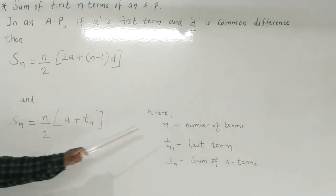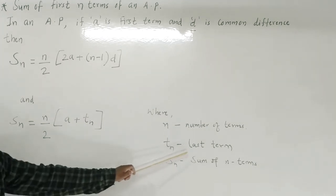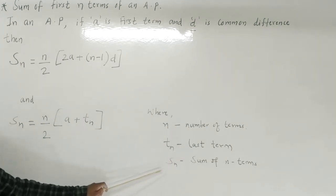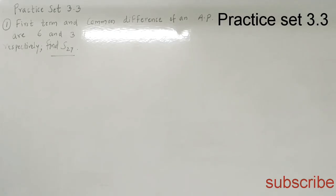Here n is the number of terms, Tn is the last term of the AP, and Sn is the sum of n terms of an arithmetic progression. We will use these formulas to solve Practice Set 3.3.